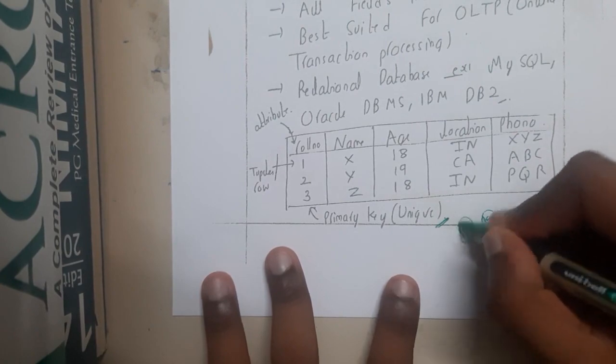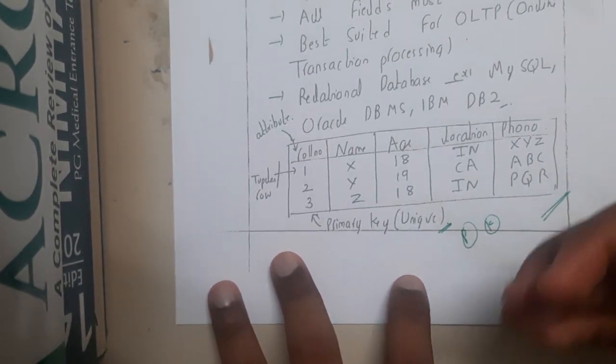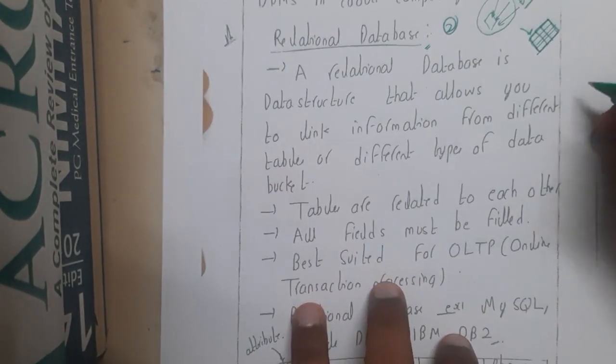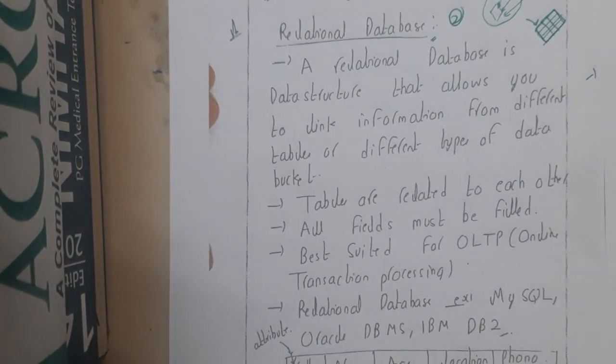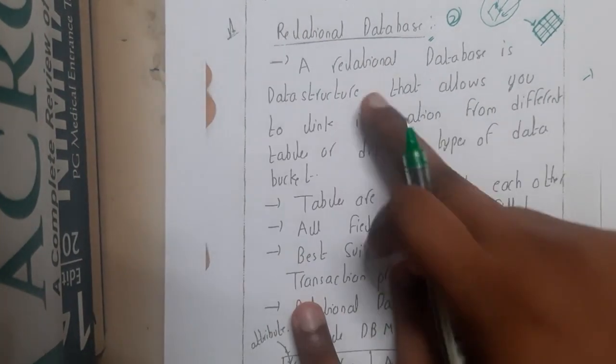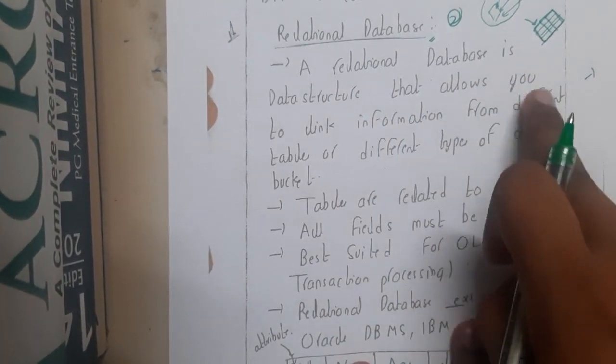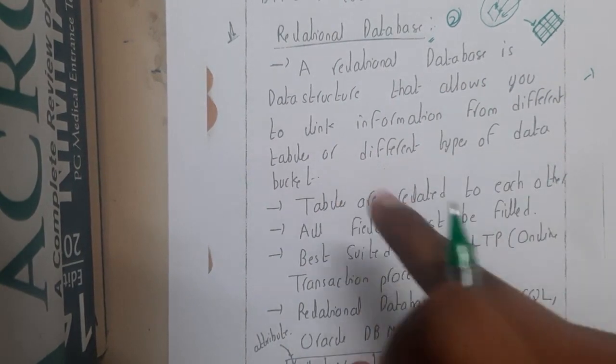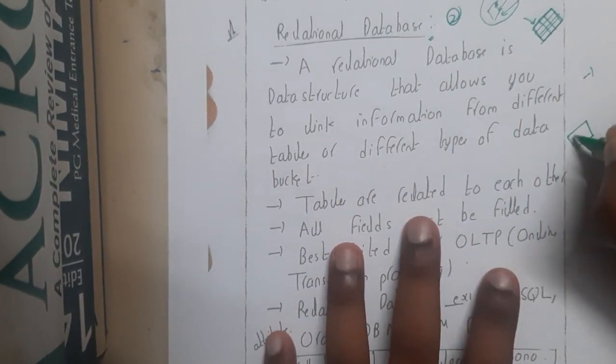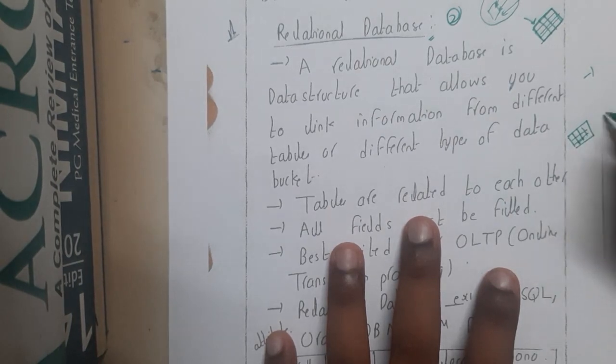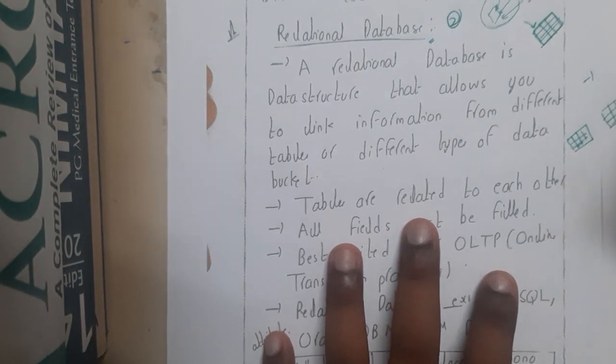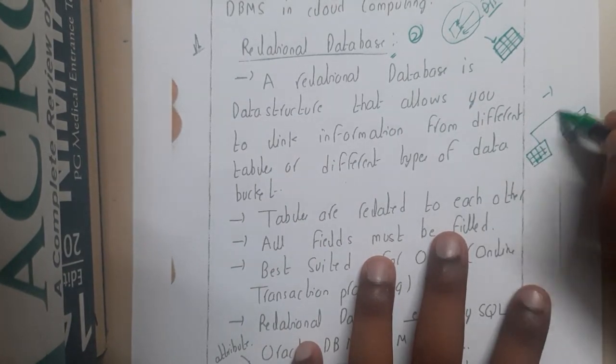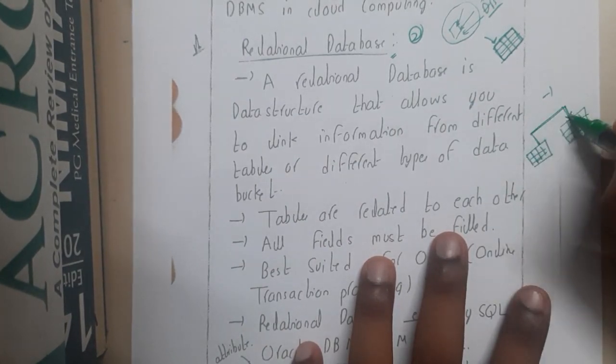Let us go through the theoretical part. You can cover it from your previous knowledge because we studied relational databases as a whole subject. A relational database is a data structure that allows you to link information from different tables or different types of data buckets. Once you form a table, if you form one more table, relational database means there should be some relation. That relation, this concept is relational database.